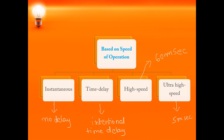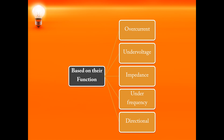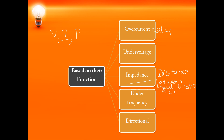Next, based on the function which they perform, relays can be classified as over current, under voltage, impedance, under frequency, and directional. The relays continuously monitor three quantities: voltage, current, and power. In case there is any variation other than the setting value, the relay has to operate. The over current relay operates whenever the current exceeds the set value. Under voltage relay operates whenever the voltage goes below the set value. Impedance relays measure the distance between the fault location and the relay, and operate if the fault lies within its zone.